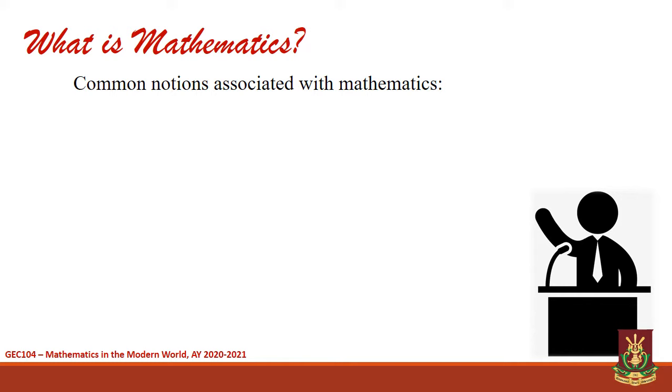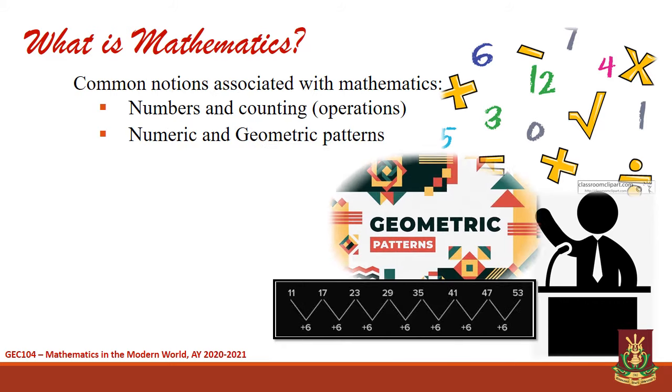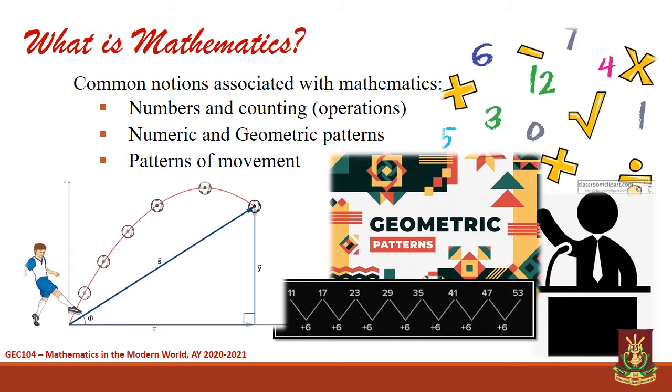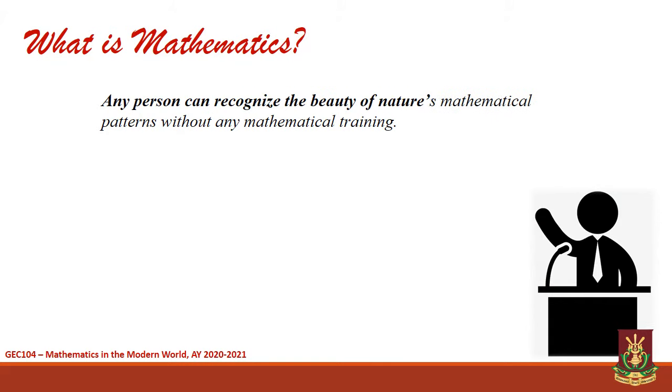Here are some common notions associated with mathematics. Number one: Numbers and counting. People easily recognize mathematics through numbers and operations. Number two: Numeric and geometric patterns. These refer to patterns observed from geometric figures or from a sequence of numbers. Number three: Patterns of movement. Since moving bodies that follow a certain pattern can be represented mathematically.